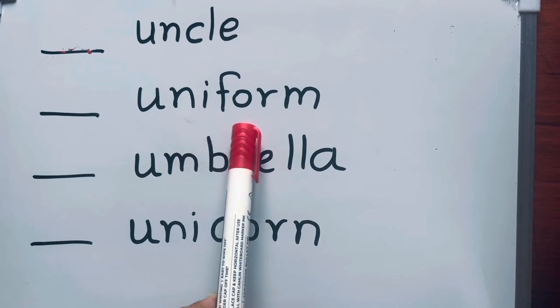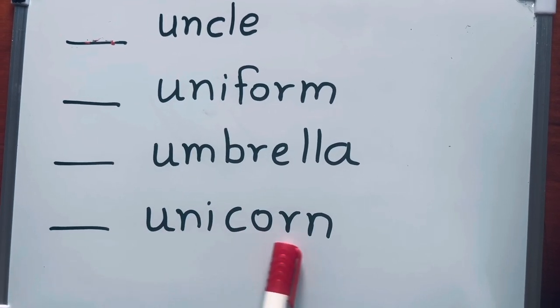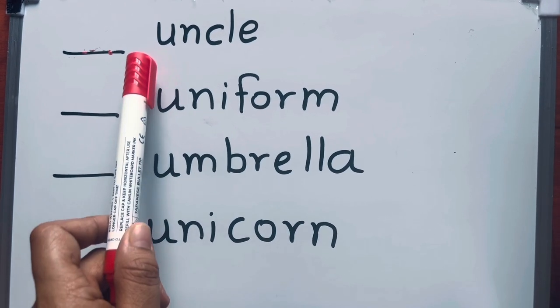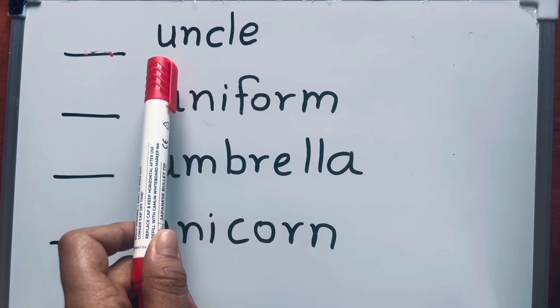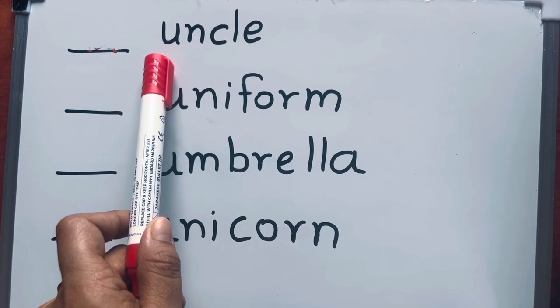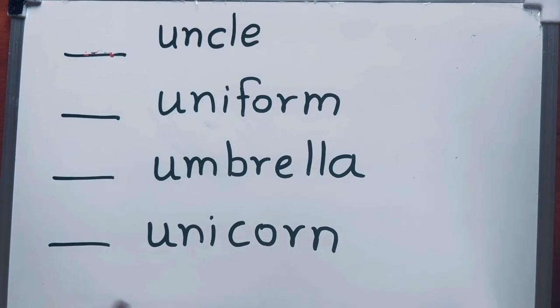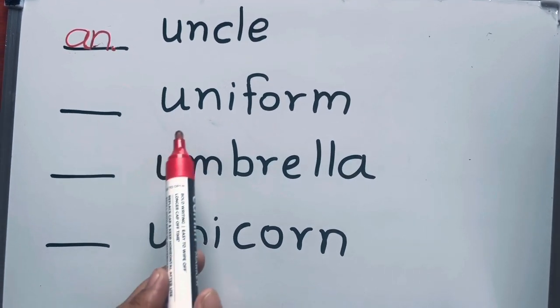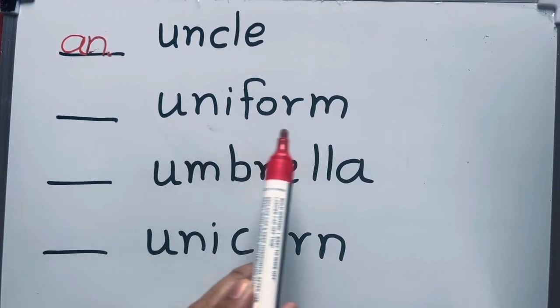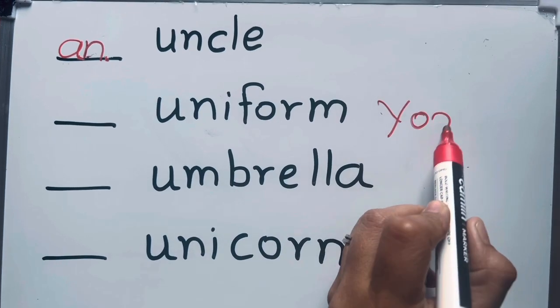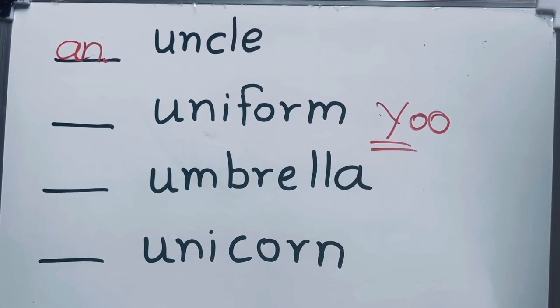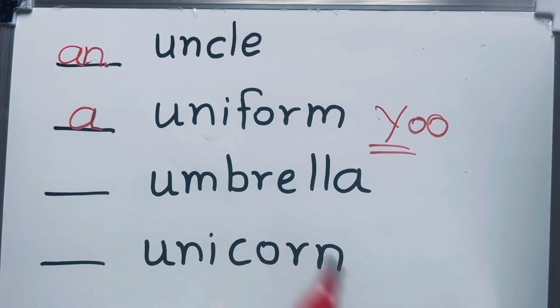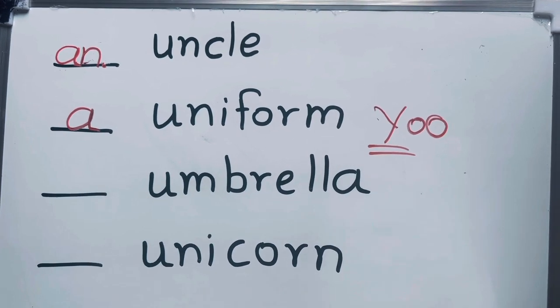Uncle, uniform, umbrella, unicorn. You can see here the sound of U is different. Uncle - when you pronounce it, it gives us a vowel sound, so we have to write an uncle. Uniform - U means here 'yoo', which is a consonant sound, not a vowel sound, so a uniform, not an uniform.